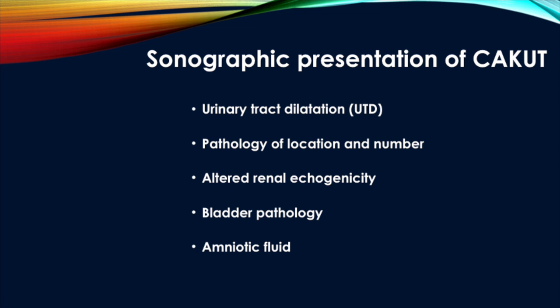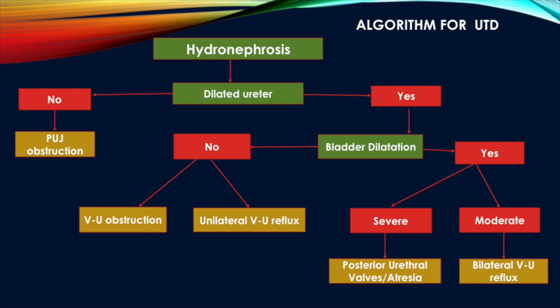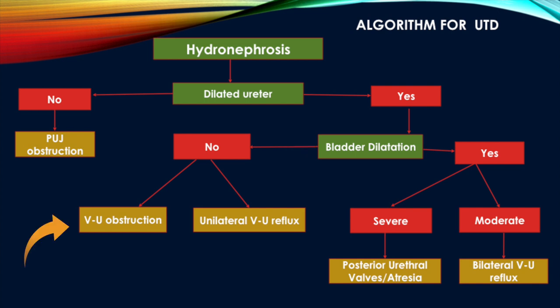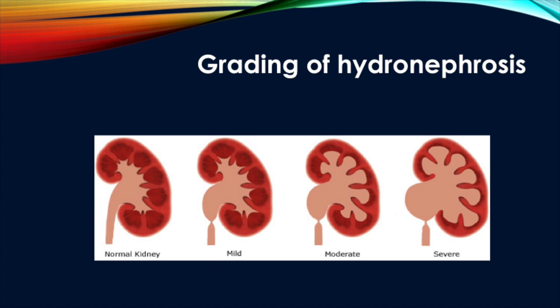The ureter and urethra are not visible prenatally unless they are diseased. Sonographically, CAKUT may present as urinary tract dilatation, pathologies of location and number, altered renal echogenicity, bladder pathology, and all of these affecting the amniotic fluid. When we see a case of hydronephrosis we should follow this algorithm: first see if the ureters are dilated. If ureters are not dilated, it is probably a PUJ obstruction. If ureters are dilated, look at the bladder — if the bladder is normal it could be PUJ obstruction or unilateral VU reflux. If the bladder is severely dilated it can be posterior urethral valve or urethral atresia; if moderately dilated it can be bilateral VU reflux.